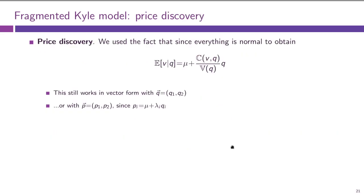Let us turn back to price discovery, which we briefly mentioned. We said that the amount of informed trading is a proxy for price discovery. Now let us verify this more explicitly. Given the normality of all variables V and U, we can express the conditional expectation of the fundamental value V conditional on order size in this linear form — and that is where our linear price equation also comes from.